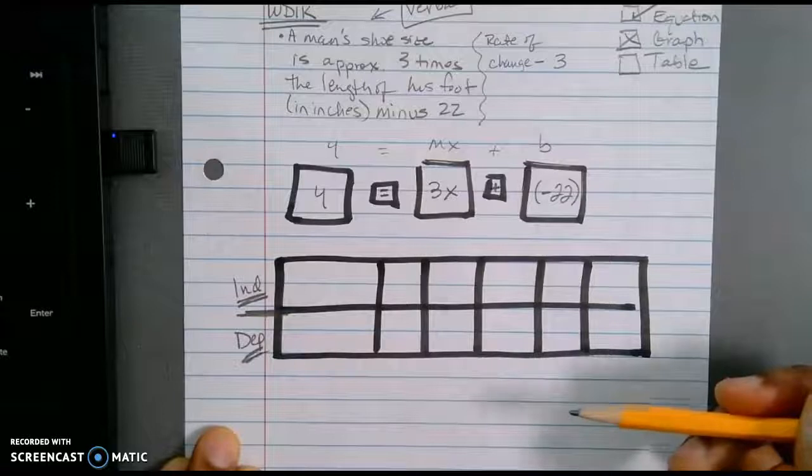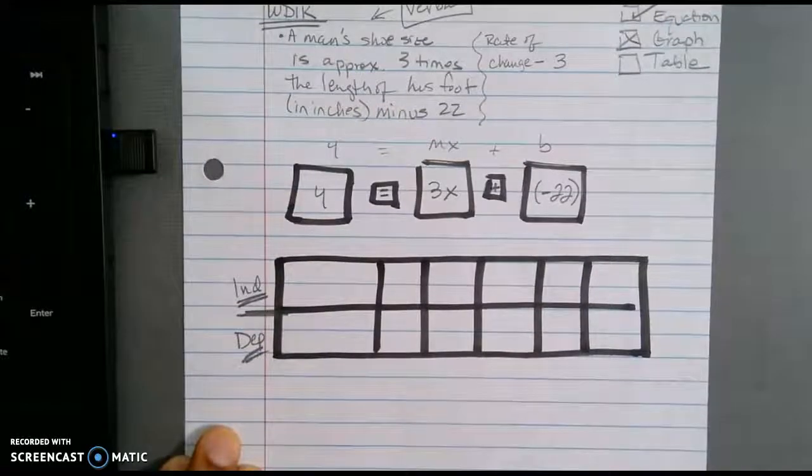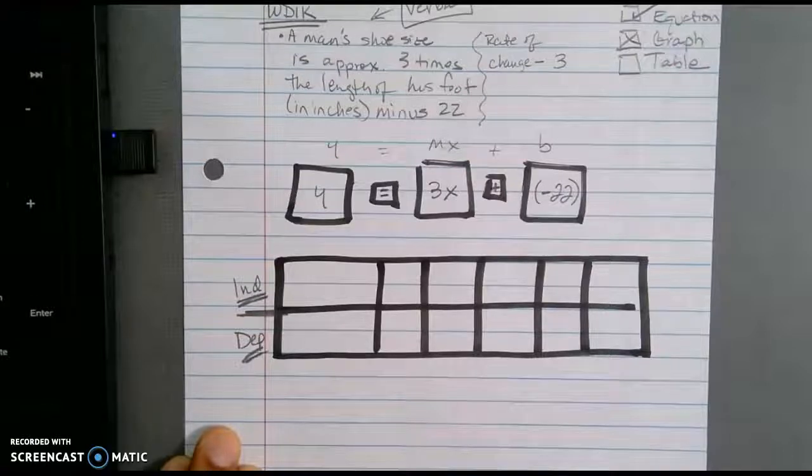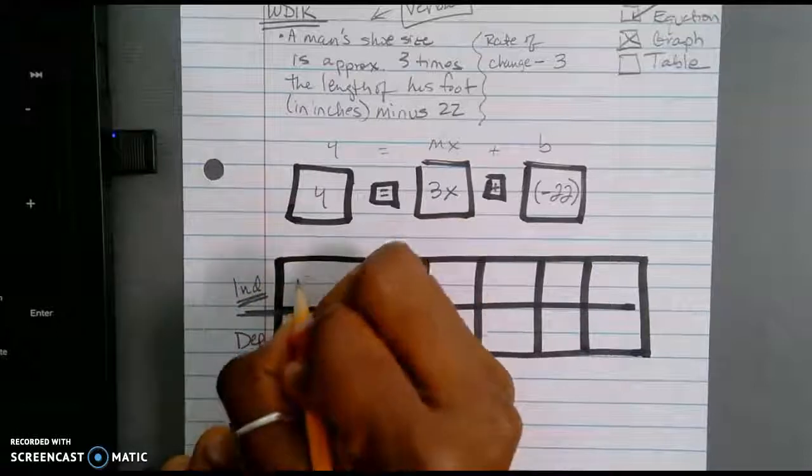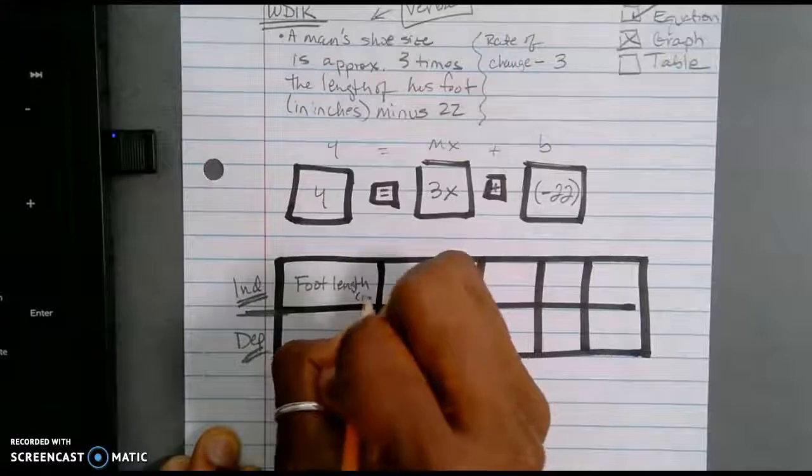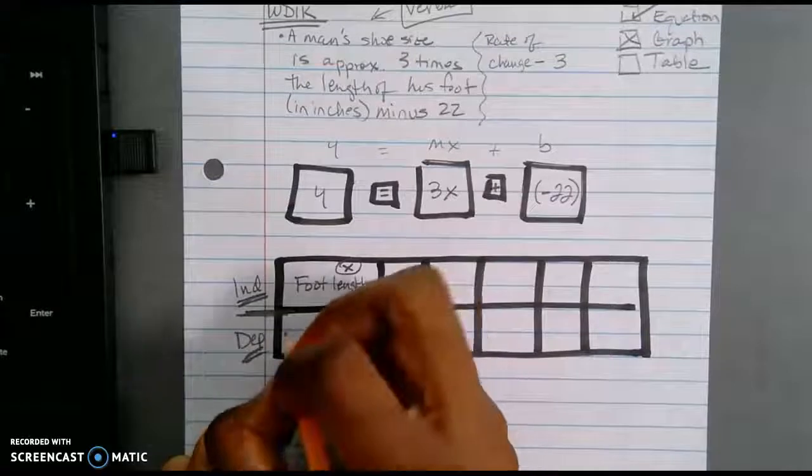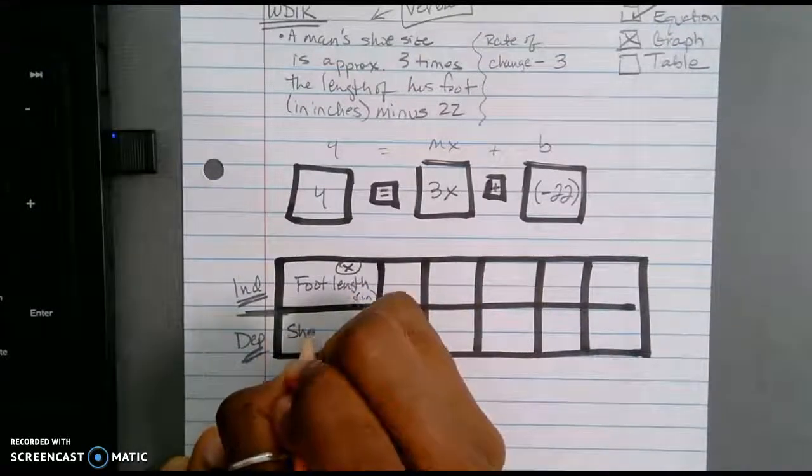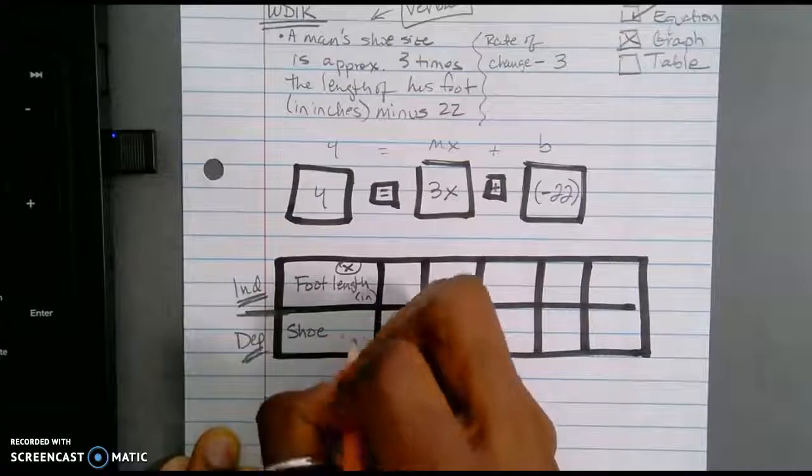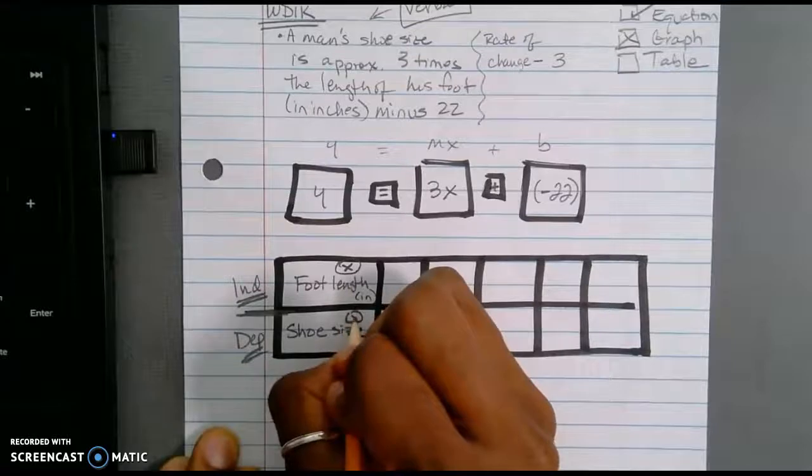And the reason that I've done this is when you are doing a table, normally the x is at the top and the y is at the bottom. So what value is going to be dependent? What value is going to be independent? What depends on the other? Does foot length depend on your shoe size? Or does shoe size depend on your foot length? You guessed it. So the foot length is going to be our independent, and that's going to be in inches. And I'm going to make this my x value.